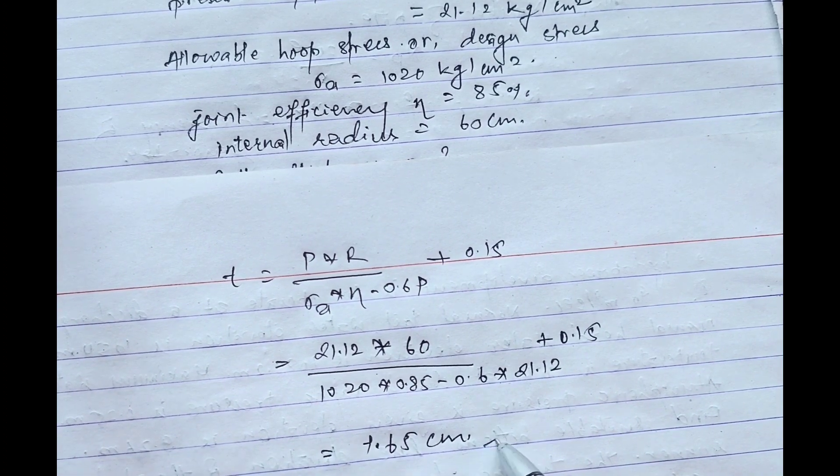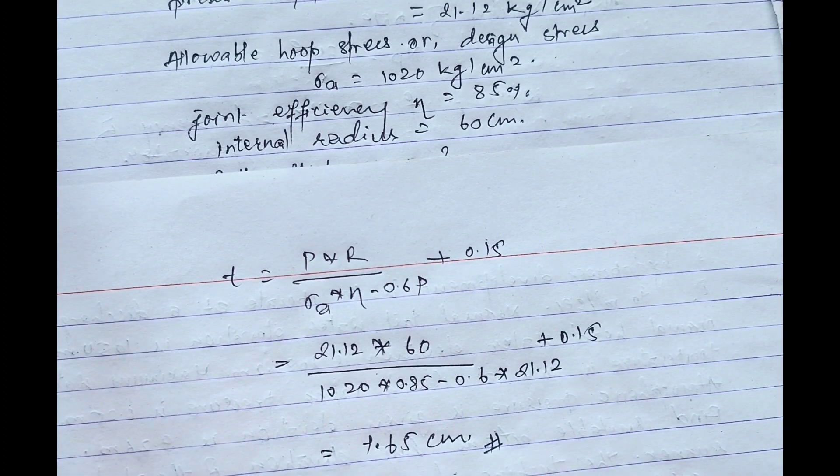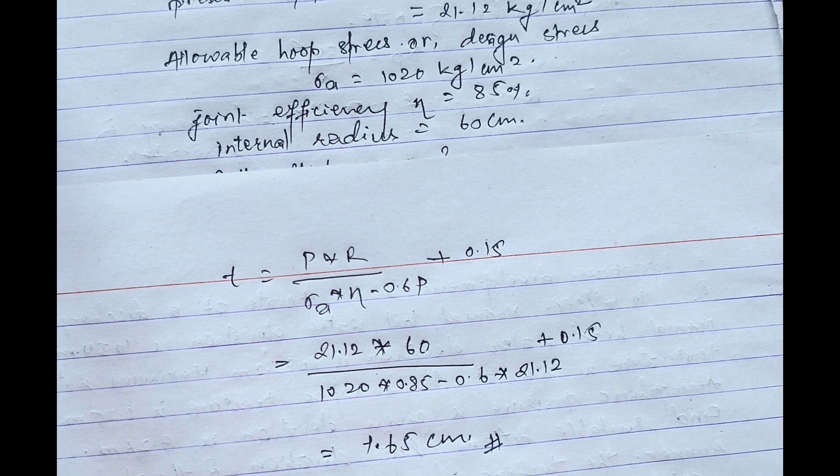The required wall thickness of penstock with efficiency of 85 percent at design stress 1020 kg per cm² having radius of 60 cm is 1.65 centimeter. So for today we end the video here.